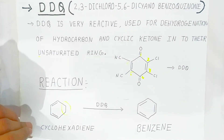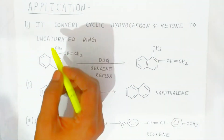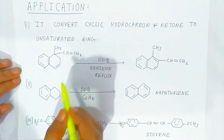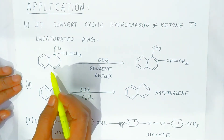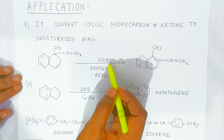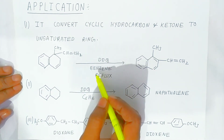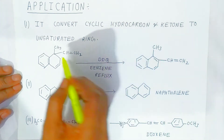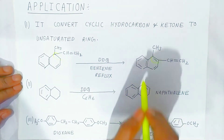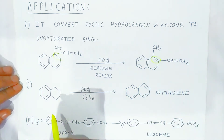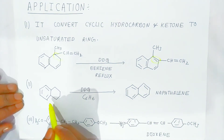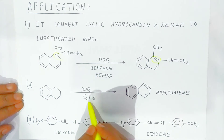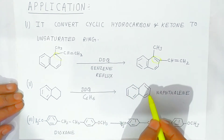Some applications of this reaction: DDQ converts cyclic hydrocarbons and ketones to unsaturated rings. When you add DDQ in the presence of benzene and reflux, a double bond is formed. In another example, with DDQ in the presence of benzene, a reactant is converted into naphthalene.